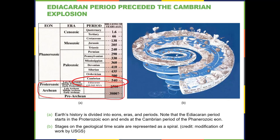It's called pre-Cambrian because there's a big event — really a whole lot of events — at the border between pre-Cambrian time and the Paleozoic era. The very first period of the Paleozoic era is called the Cambrian period, which is about 500 to 540 million years ago.